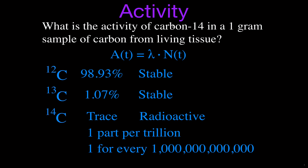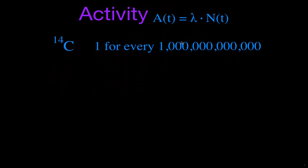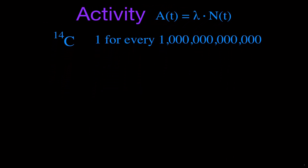We want to figure out what is the activity of carbon-14 in a one-gram sample of carbon. To do that, we need to know how many atoms of carbon-14 we have, which means figuring out how many trillions of atoms are in a one-gram sample of carbon. This may look a little like chemistry and stoichiometry: we have a one-gram sample of carbon, and we want to convert that into the number of atoms.